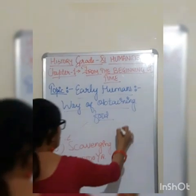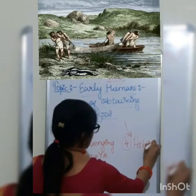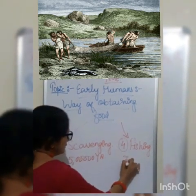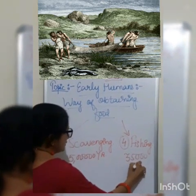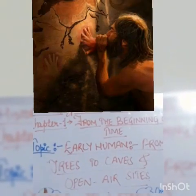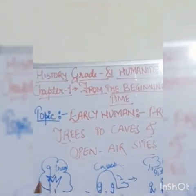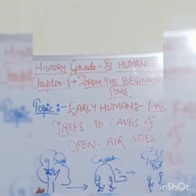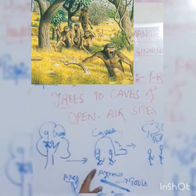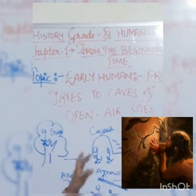The fourth method, which is very common, is fishing. It is popular even today and started around 35,000 years ago. The next sub-topic is early humans moving from trees to caves and open-air sites. Early humans used to stay on trees because of fear of wild animals. They then started living in caves to protect themselves from extreme temperatures, either hot or cold.